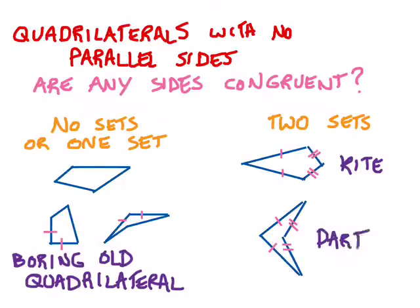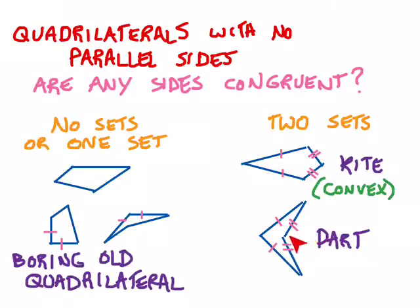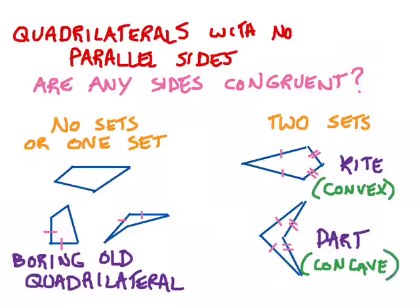The only difference between a kite and a dart is that one is concave and one is convex. The kite has no sides that go into itself — that means the kite is convex. Whereas looking at the dart, you notice that one angle seems to be pushed in; it's got a reflex angle on the inside — that is an example of something concave. So if there are two sets of congruent sides, it's either a kite or a dart: if it's convex, it's a kite, and if it's concave, it's a dart.